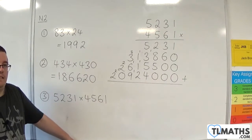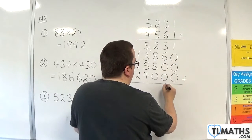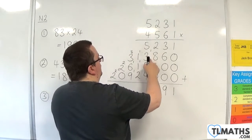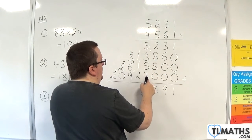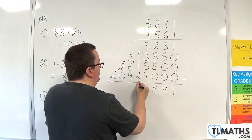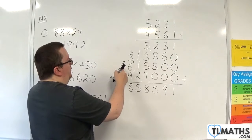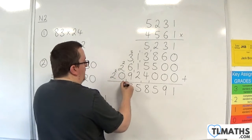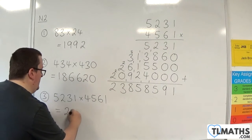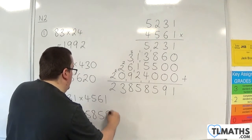So we now have four numbers which we need to add together. 1 plus 0 plus 0 plus 0 is 1. 3 plus 6 is 9. 2 plus 8 is 10, plus the 5 is 15 — put the 5, carry the 1. 5, 8, 13, 17, plus the 1 is 18 — so put the 8, carry the 1. 1 plus 1 plus 2 is 4, plus that 1 is 5. 3 and 6 is 9, plus the 9 already there is 18 — put the 8, carry the 1. 2 plus 0 is 2, add on the 1 is 3. And then we've got the 2 left over. So our final answer is 23,858,591.